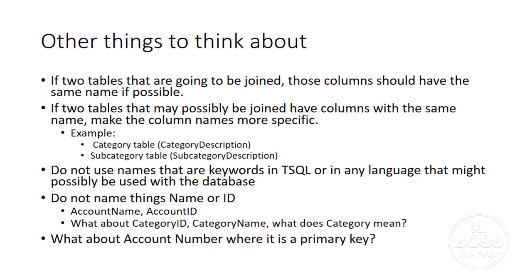For example, a column simply named description is a horrible column name. If it's in a category table, it should be category_description or subcategory_description. That way, when you make a query joining those tables, you can write a view that doesn't require the column name to be aliased. If two description columns exist, you'll get an error right away, and it will be confusing even in the query view of Management Studio.